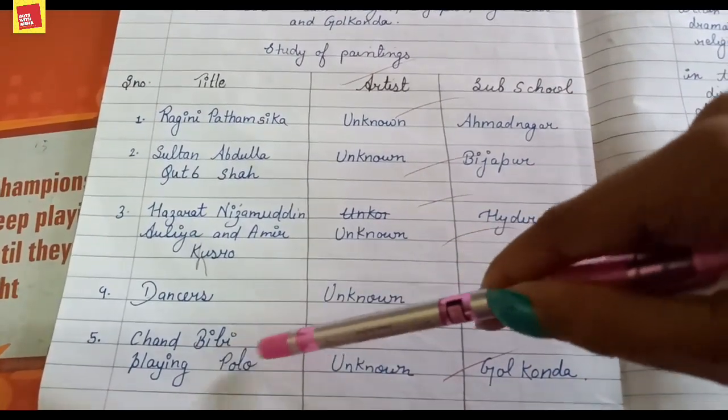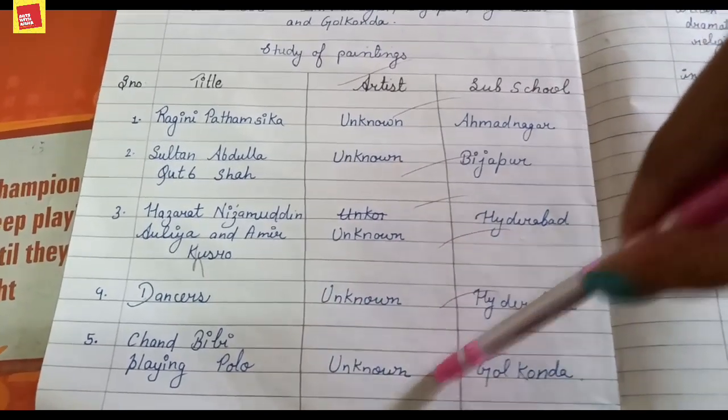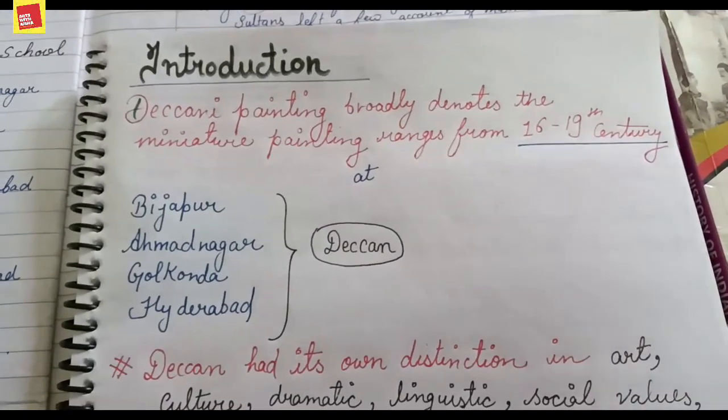The fifth and last painting is 'Chant BB playing Polo,' artist unknown, and the sub-school is Golconda.